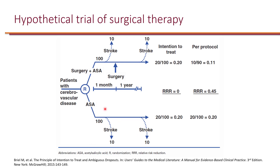After randomization in the group that received surgery, it takes some time to prepare the patients for surgery, so the surgery is not done exactly at the beginning. As a result, the patients who had early stroke had actually not yet received the surgery.